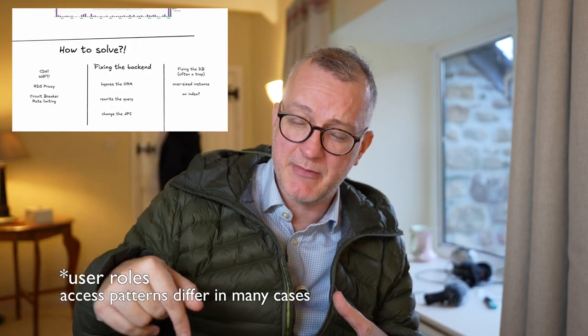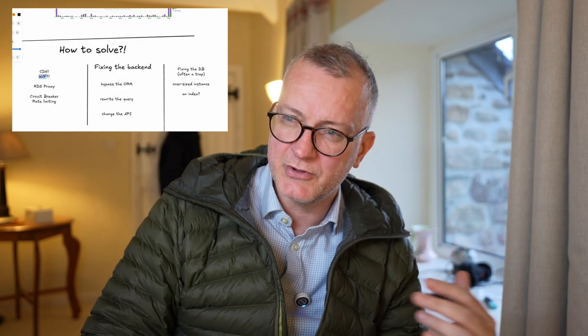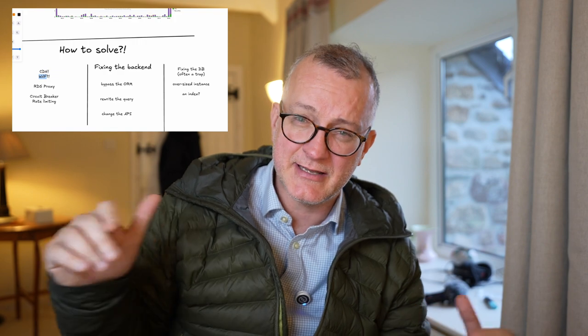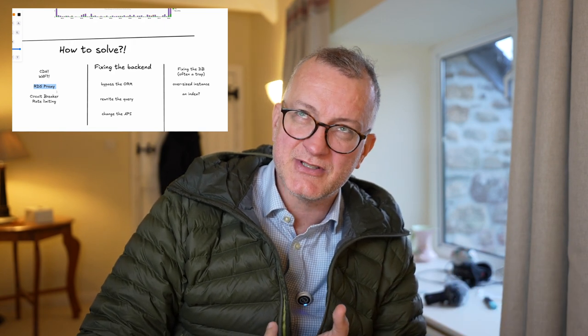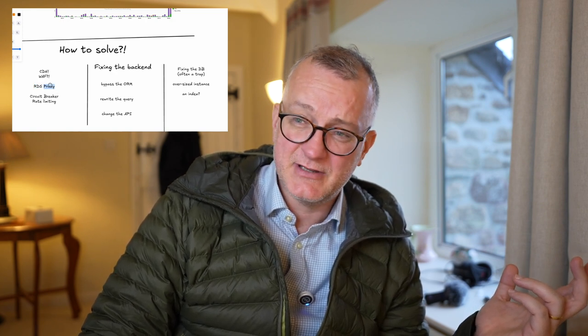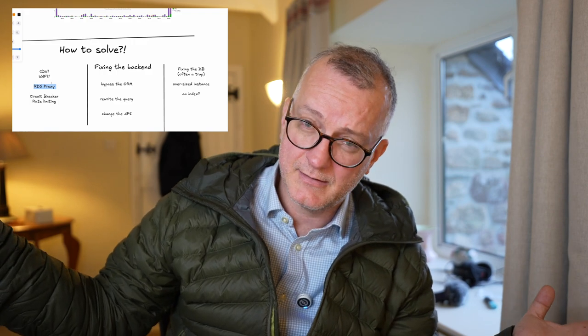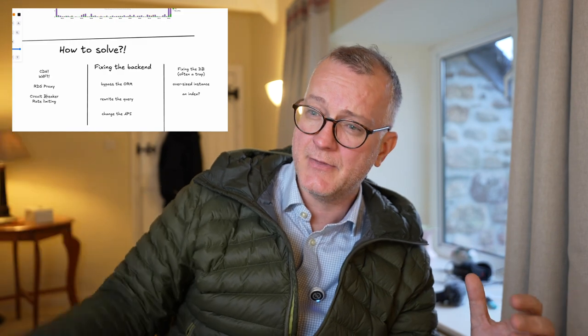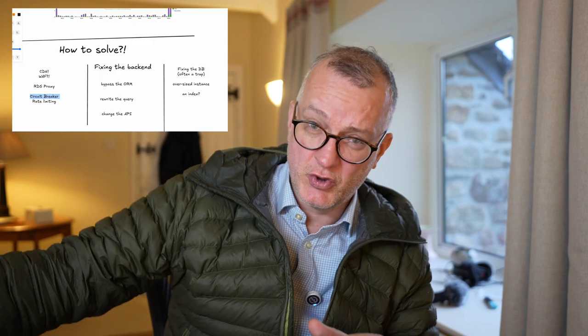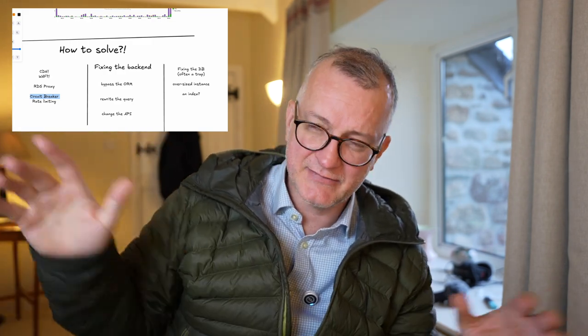I'm just raising these issues so that maybe you can comment below and give me some advice, because these are the kinds of things I'm running into. If you can't fix the backend, what else can you do? Well, there's the CDN. You could use a web application firewall to limit the expensive queries coming in that trigger all sorts of problems in the database. You can also get things called RDS Proxies — link in the blog — and they promise to rewrite the queries. I've yet to try that, but if you've had good experiences with proxies, do let me know in the comments. And last but not least, things like a circuit breaker pattern or a rate limiter, where you effectively smooth out the spikes. Rate limiting smooths out the spikes; the circuit breaker is like your home circuit breaker — it allows the database to recover instead of completely falling down.